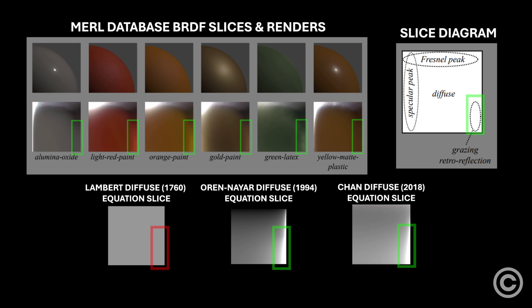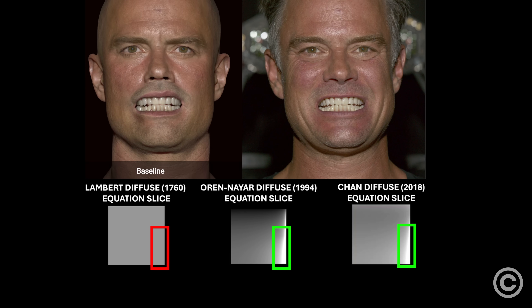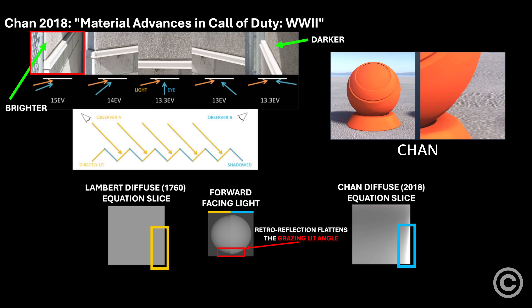The lower left corner shows the grazing retroreflection. Notice how fully rough Oren-Nayar and Chan offer that behavior while Lambert's BRDF completely lacks this. Here are some teeth with Lambert shading and a photographic reference. Notice the visual richness when a more Oren-Nayar-like grazing retroreflection is added — the difference is pretty huge and is similar to what we see in the original Oren-Nayar photographic comparison.